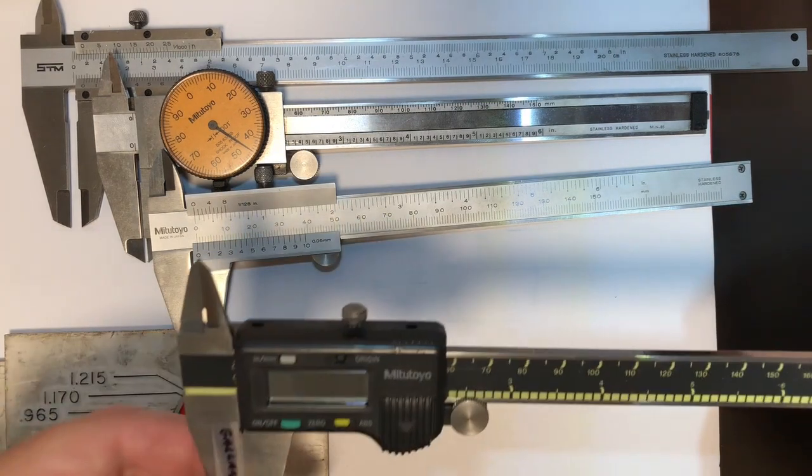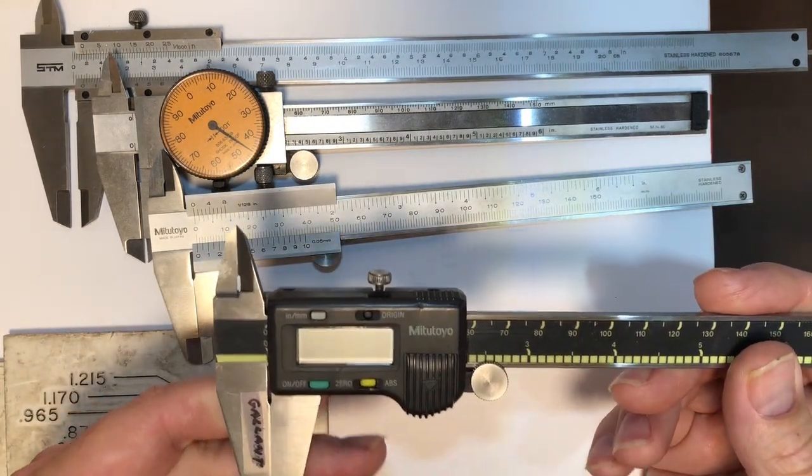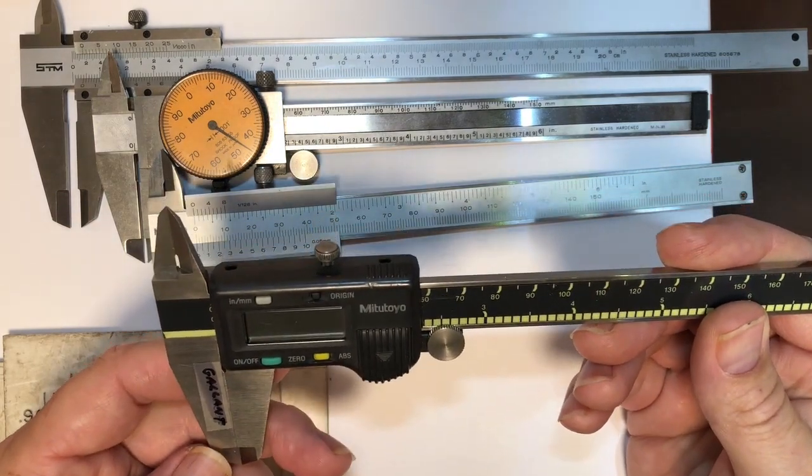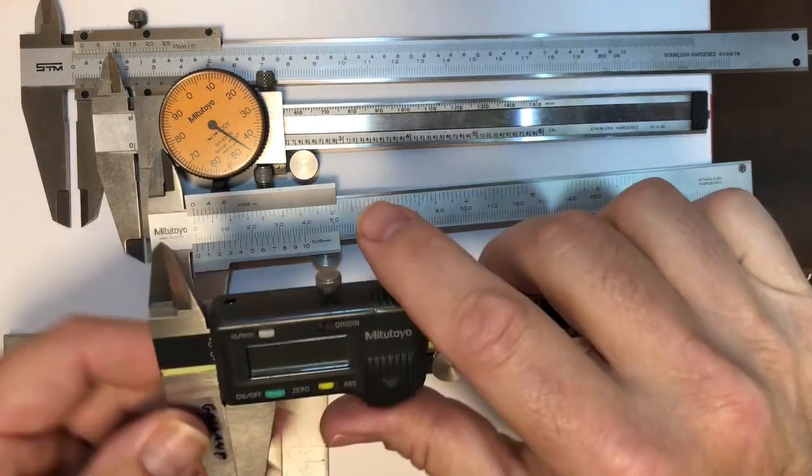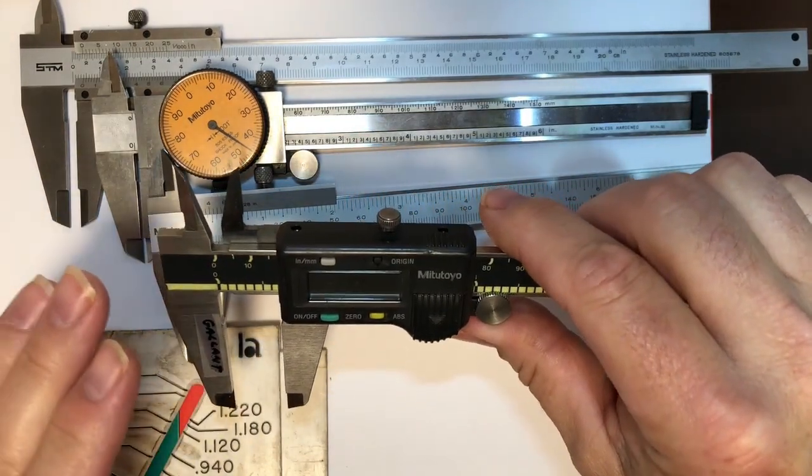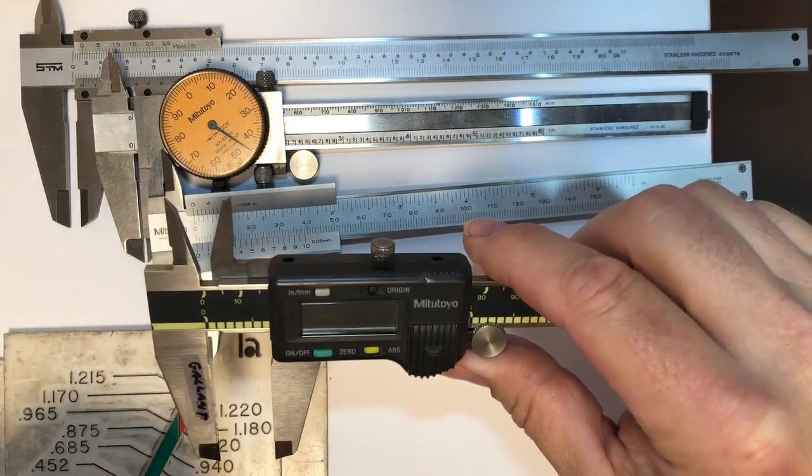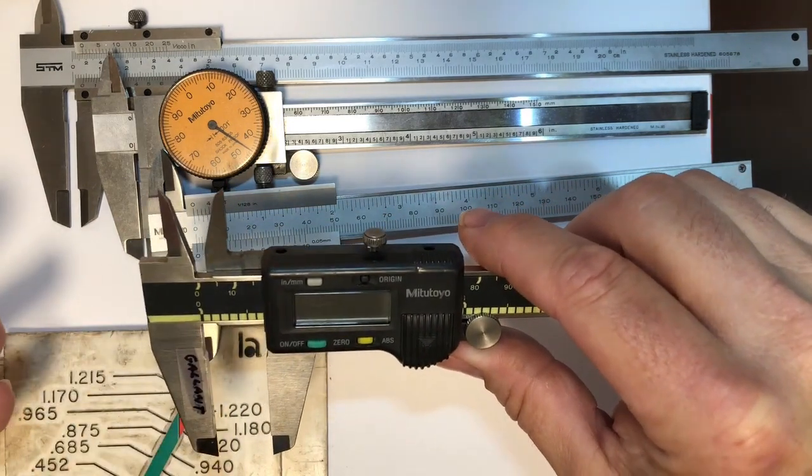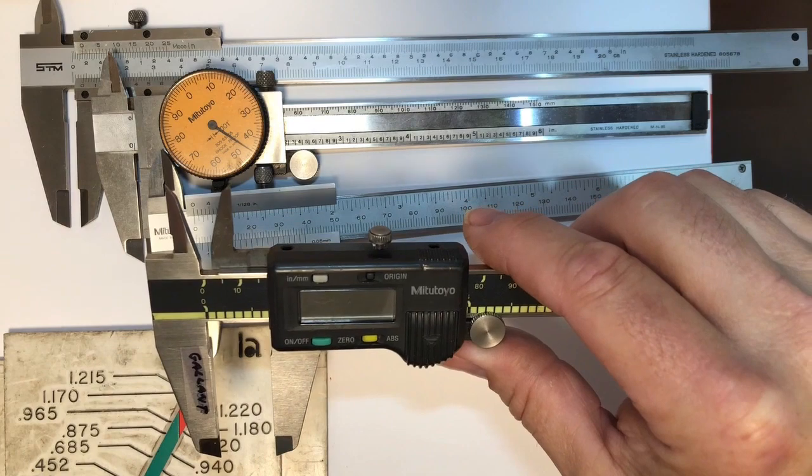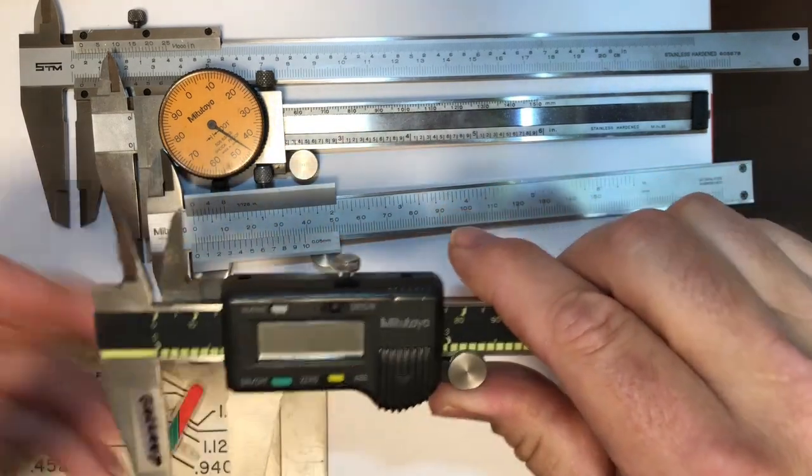The most common and most universal is going to be your digital. The main reason is because I can set it anywhere, I can open it up, turn it on, set it to any spot that you want and zero it out. So I can go from, let's say I have a part that needs to be one inch plus or minus 10 thou or 20 thou.